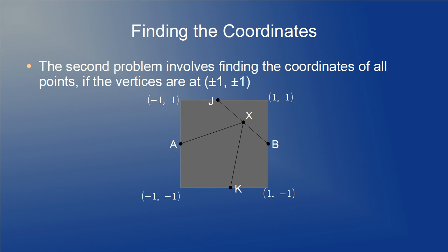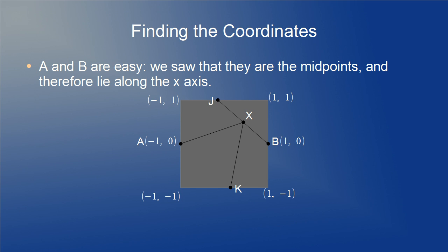The next problem involves finding the Cartesian coordinates of the points A, B, J, K, and X if we place the vertices of the square at plus or minus 1 plus or minus 1 as shown. As we remarked earlier, A and B are easy. They are the midpoints of the respective sides and lie along the X axis at negative 1, 0 and positive 1, 0.